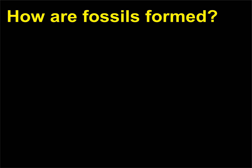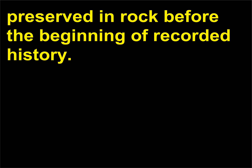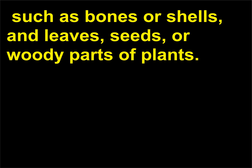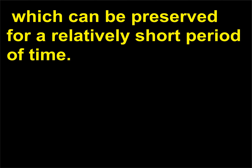How are fossils formed? Fossils are the remains of animals or plants preserved in rock before the beginning of recorded history. It is unusual for complete organisms to be preserved; fossils usually represent the hard parts of animals such as bones or shells, and leaves, seeds, or woody parts of plants. Some fossils are simply the bones, teeth, or shells themselves, which can be preserved for a relatively short period of time.